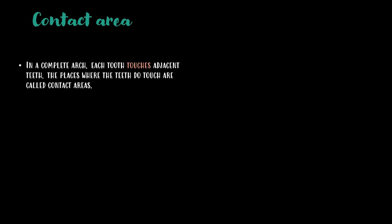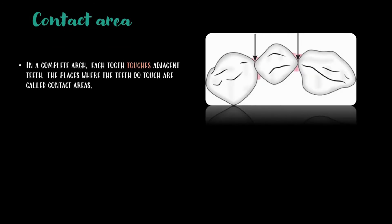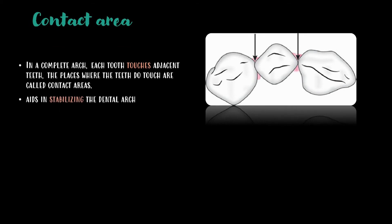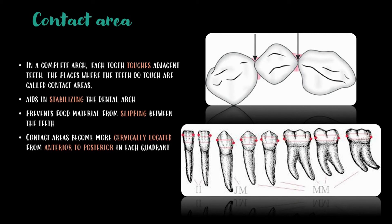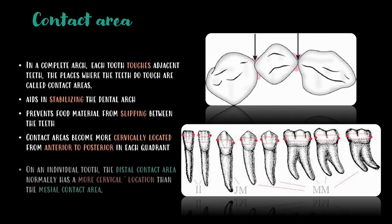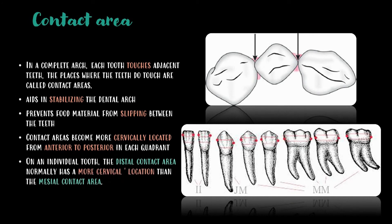The contact area: in a complete arch, each tooth touches adjacent teeth. These places where the teeth do touch are called the contact areas. These areas aid in stabilizing the dental arch and prevent food material from slipping between the teeth. Contact areas become more cervically located from anterior to posterior in each quadrant. On an individual tooth, the distal contact area normally has a more cervical location than the mesial contact area.